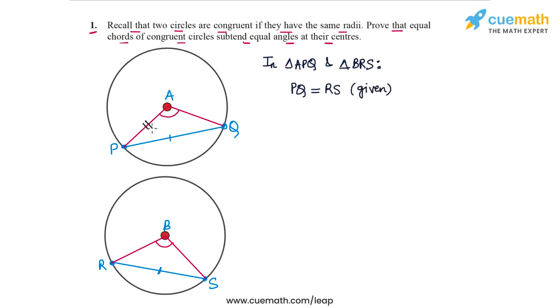Also, we have AP and BR, they are equal because both of them are radii of the congruent circles and hence they must be equal. So AP is equal to BR, equal radii.